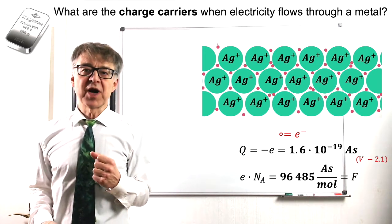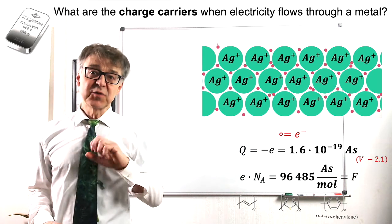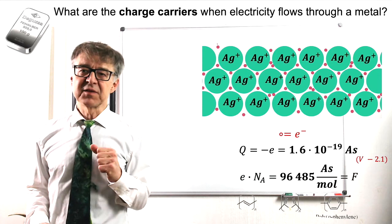Electron conductors comprise metals, semi-metals and intrinsic conductive polymers, ICPs for short.